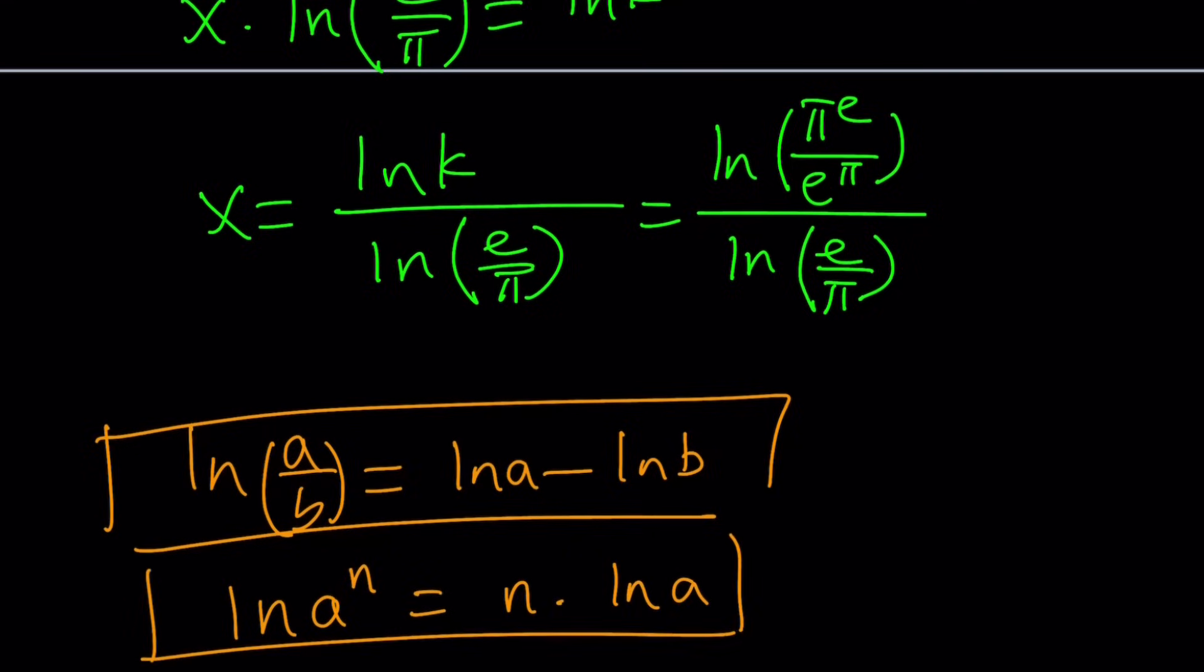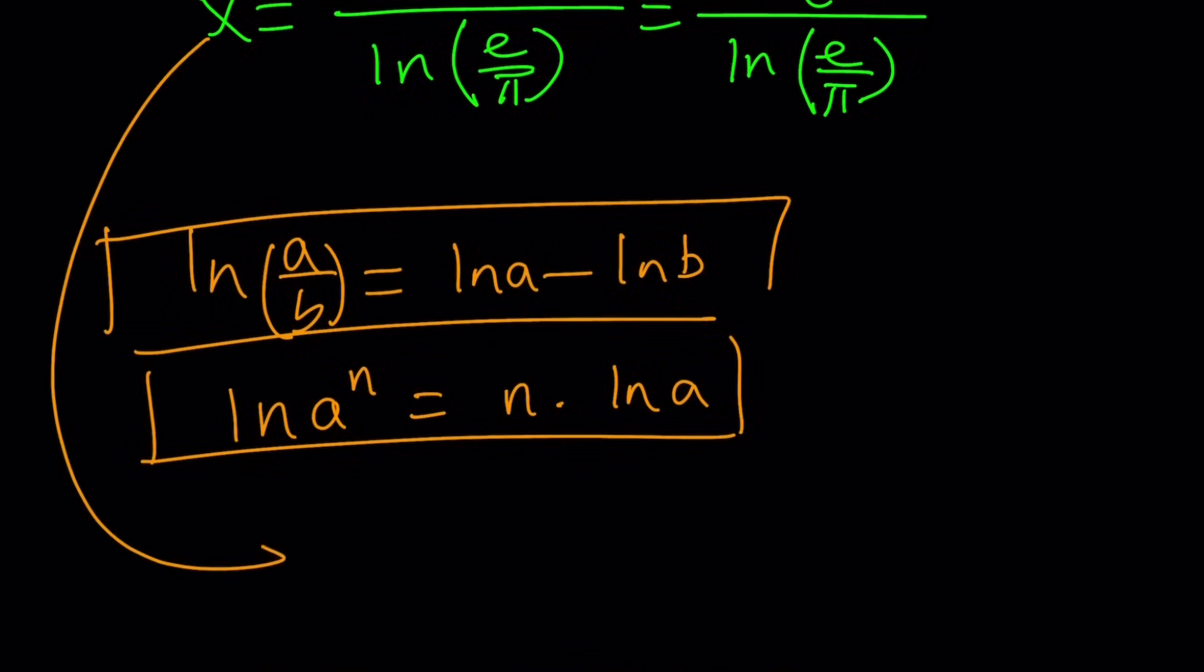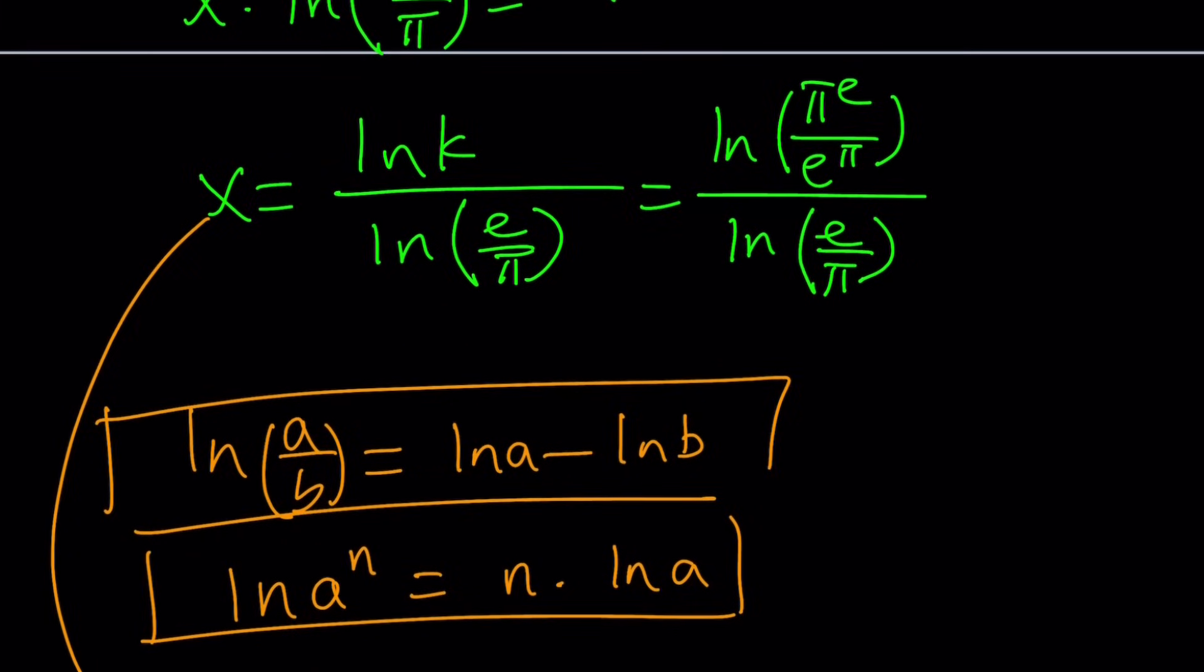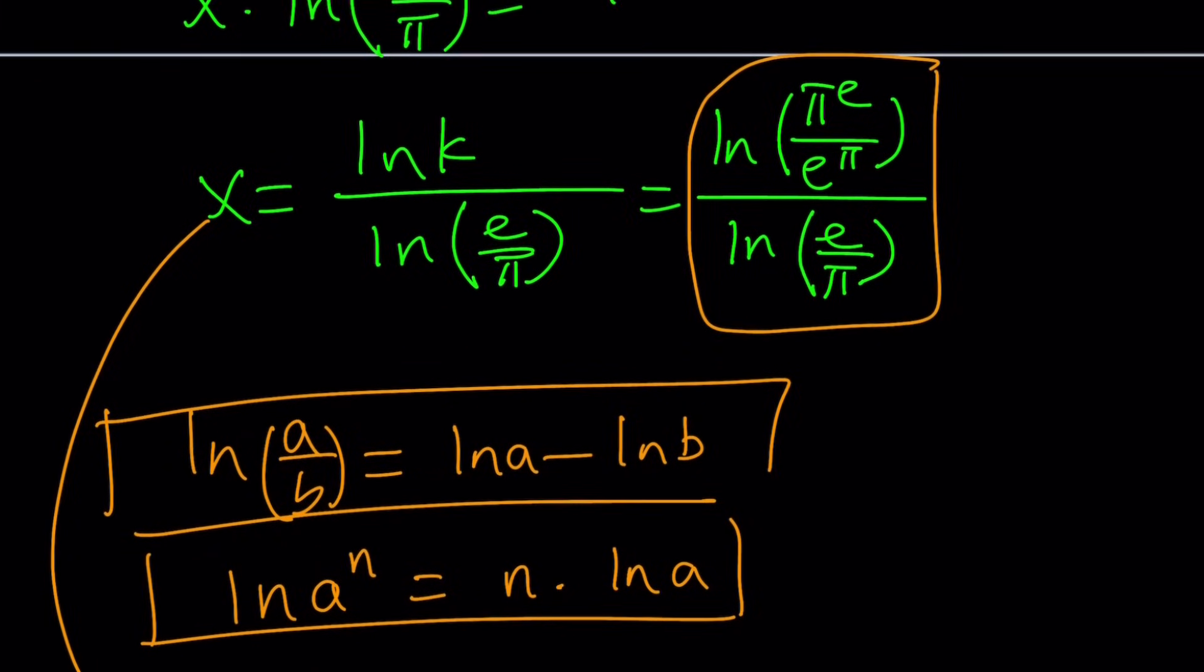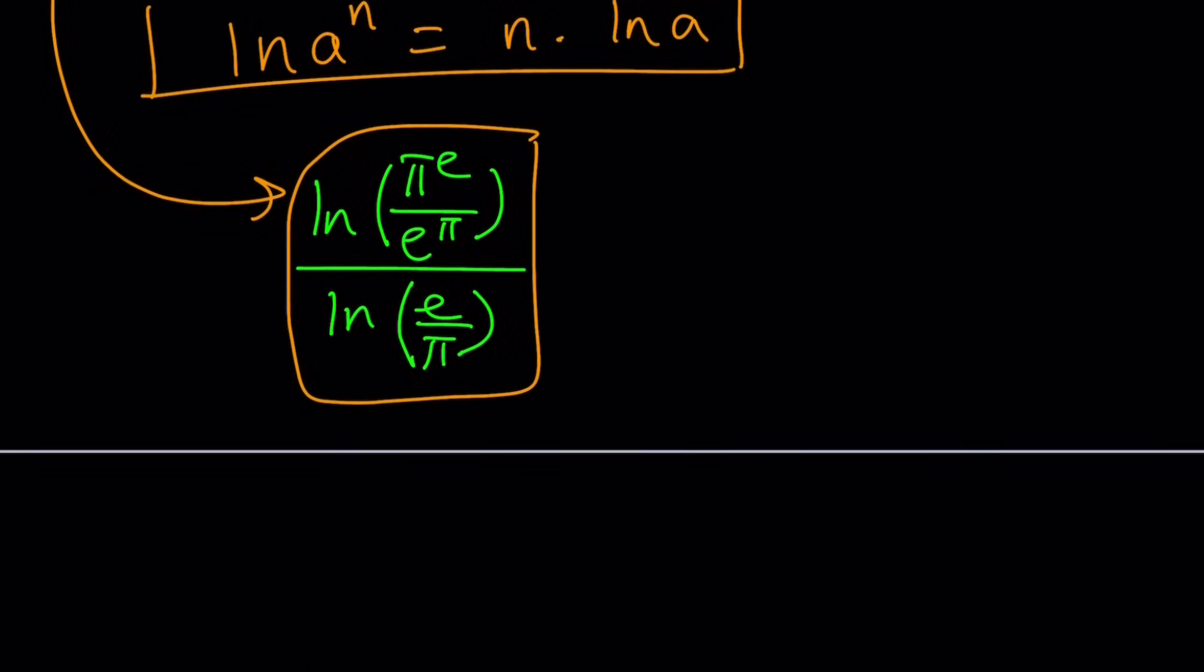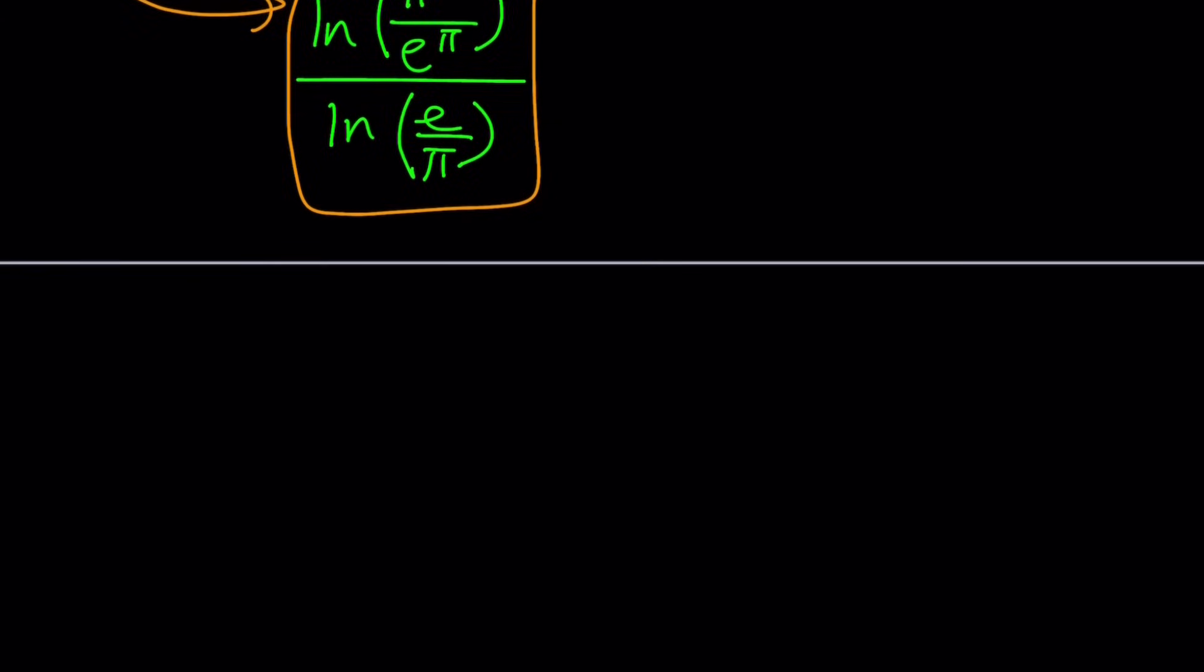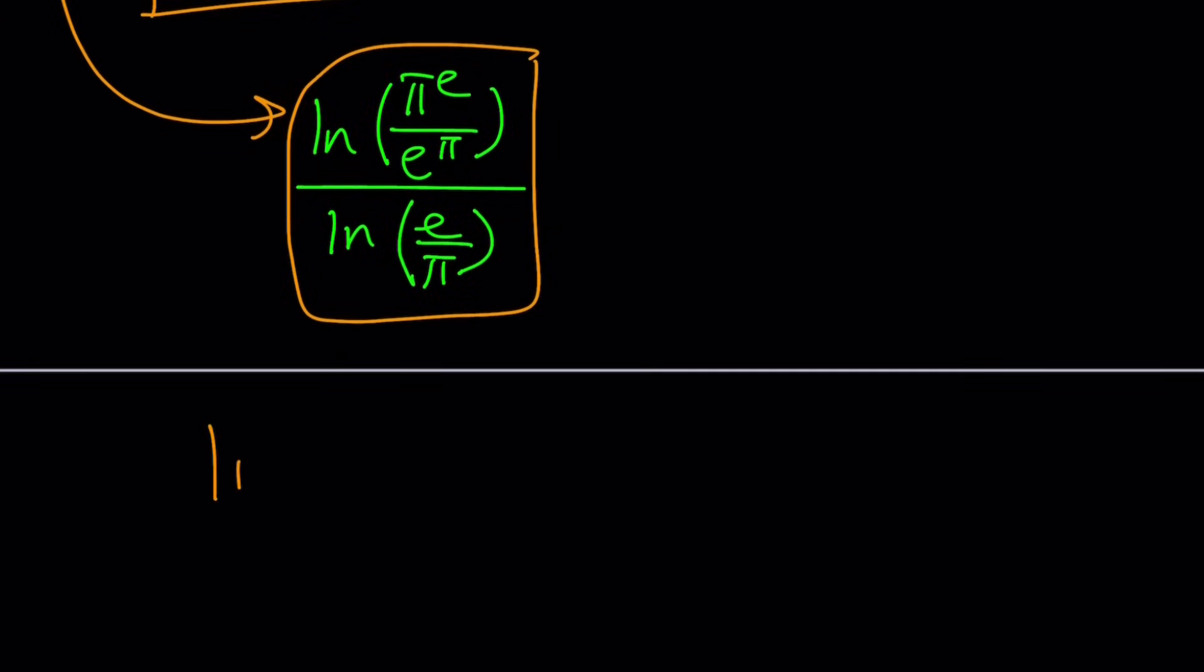We're going to use the power property which says ln a to the n is n times ln a, so you can bring the power down. Let's separate as a difference first because that's ln of a quotient: ln pi to the e minus ln e to the pi. And at the bottom we have ln e minus ln pi. ln e is 1.